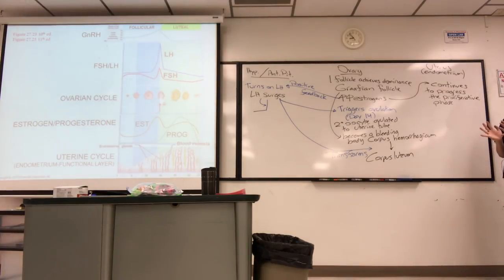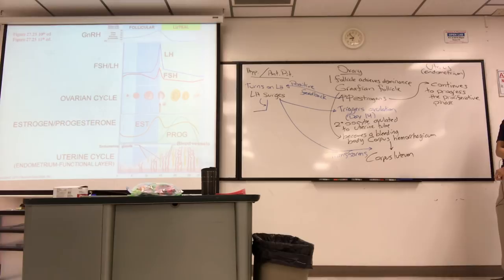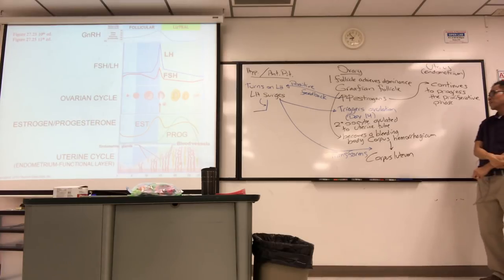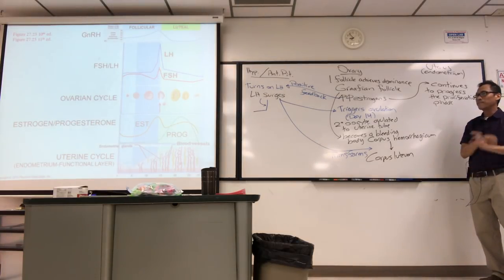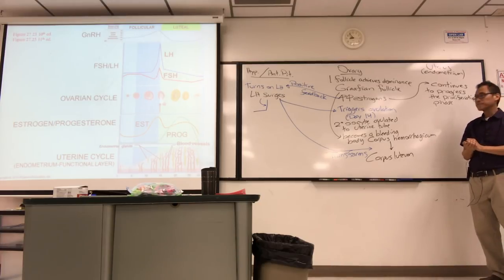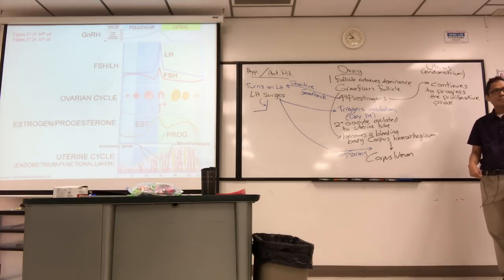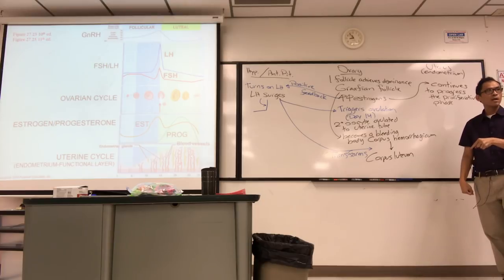When the oocyte busts out of the follicle, it makes it bleed — that's why it's called the corpus hemorrhagicum. This is a different bleeding from menses: the menses bleeding is of the endometrium, while this is inside the ovary. The corpus luteum — we're in the luteal phase now, about day 15 to 27. Corpus luteum is yellow, contains cholesterol, and is making and secreting progesterone. That's its job.